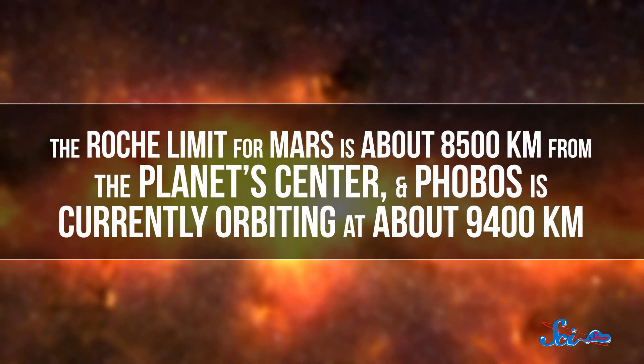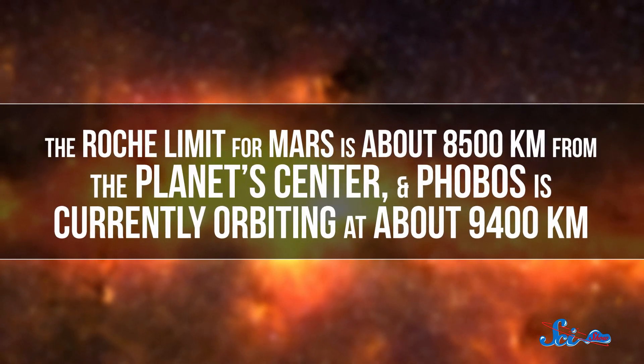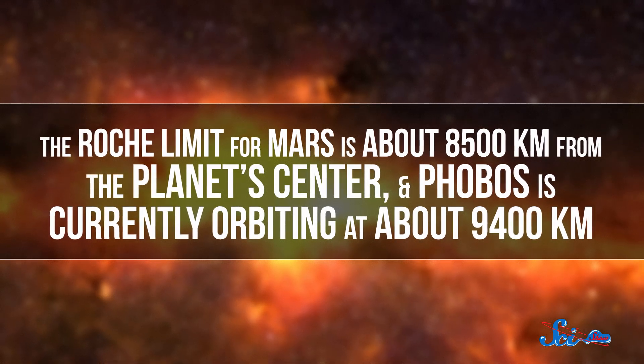The Roche limit for Mars is about 8,500 kilometers from the planet's center, and Phobos is currently orbiting at about 9,400 kilometers. Meaning that the moon has less than 1,000 kilometers to go before Martian gravity rips it apart. Then, all of the chunks of rock and dust that used to be a moon will form a ring around the planet.